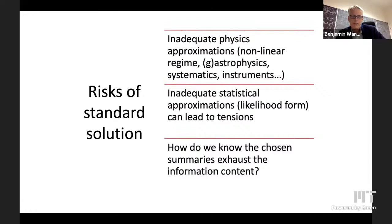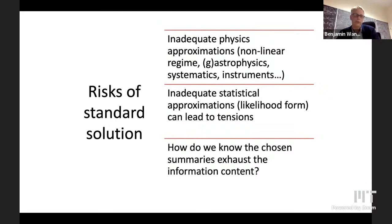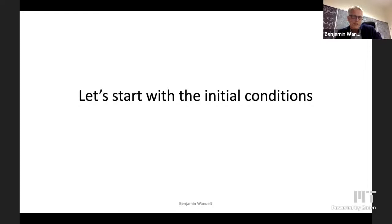An even more fundamental risk is: how do we know we've exhausted the information content in the data? We've chosen some summaries, but they may not capture everything. There may be other things we could calculate from the data that might be even more informative. The last few decades in cosmological research have been about finding good summaries — meaning essentially a combination of these risks is minimized in some sense. Let's start with the initial conditions and go to an example where we eliminate at least one of these risks. I'm going to focus first on the summary question: what if we actually analyzed everything from the field itself?